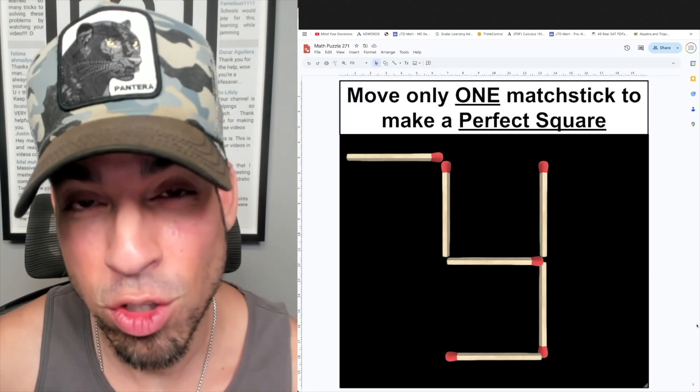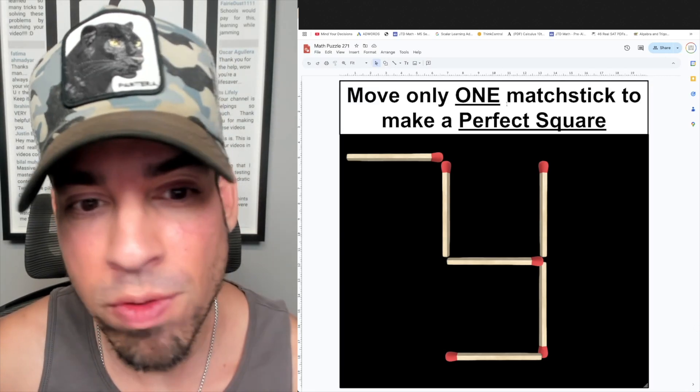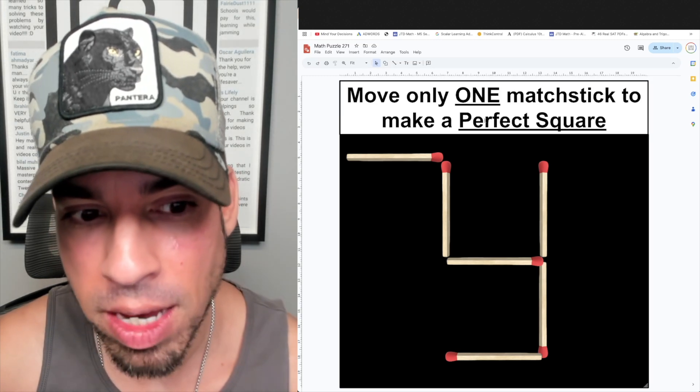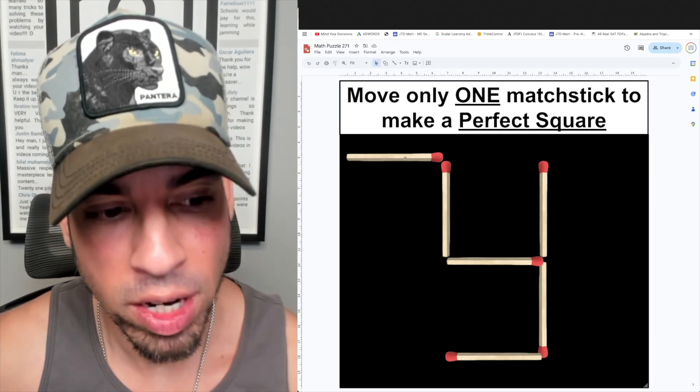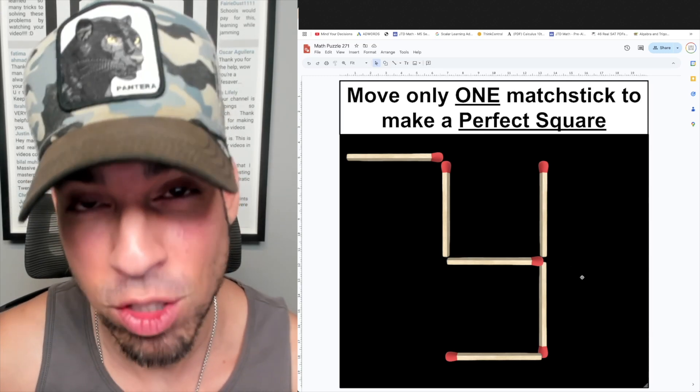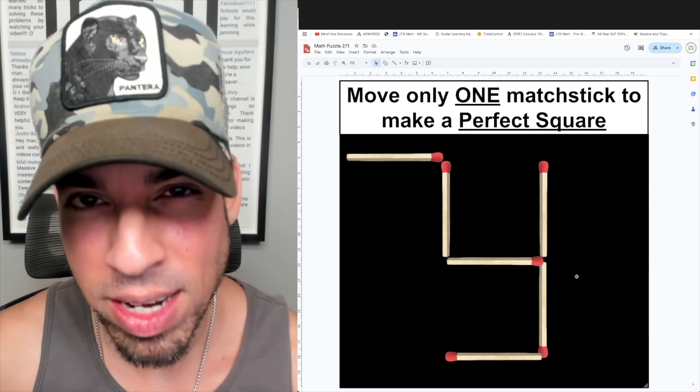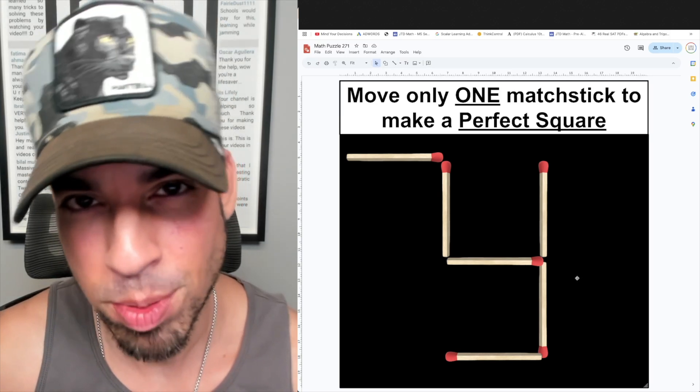What's up everybody and welcome back to another math puzzle. In this one the question is as follows: move only one matchstick to make a perfect square. Okay, so we have all these six matchsticks ordered as follows. You've got to make a perfect square. Hit that pause button and see if you can figure it out. When you're ready, hit play and I'll give you the explanation.